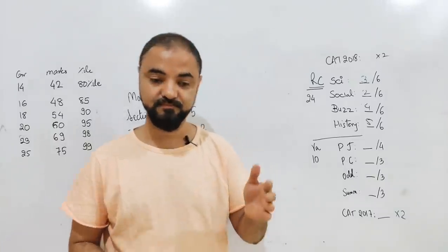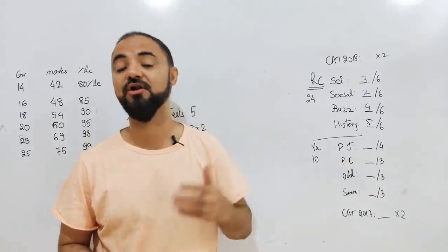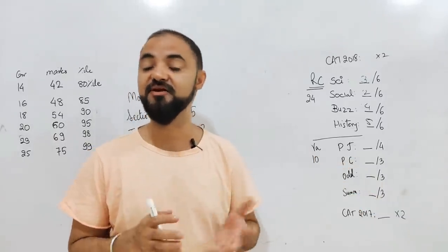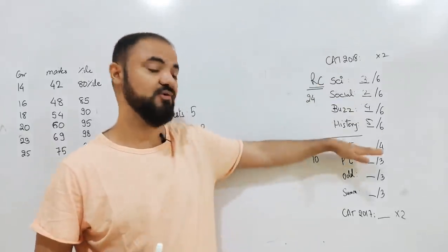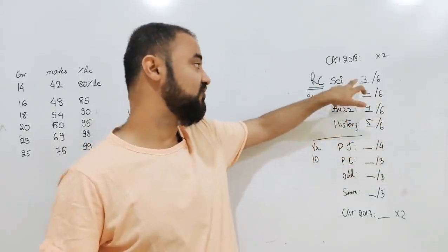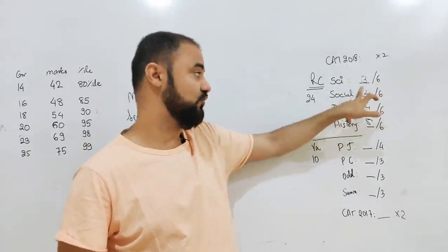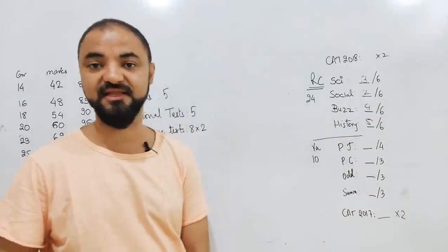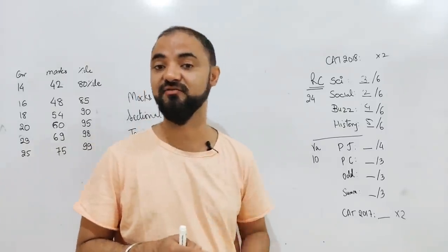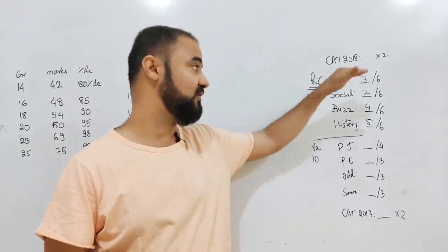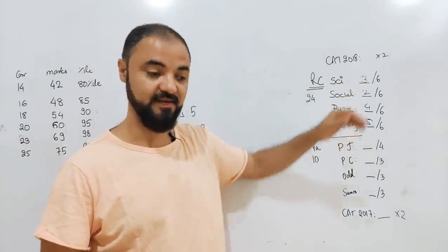In quant, you immediately know like geometry is my strong area or logs is my weak area. In verbal we don't do that. So let's do that. Let's define them out. There's a possibility on the exam day you might find 12 questions from science and no questions from social. It can be mix and match, but these are the four major brackets of the exam.